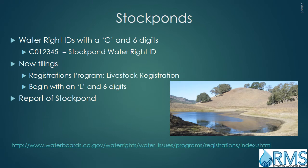Stock Pond registrants can be identified by a Water Right ID that begins with a C followed by six digits. Federal Stock Ponds begin with an F and end with a C. Stock Pond Water Rights are agreements with the Water Board that include provisions such as when and how much water may be diverted, what the water may be used for, and where the water may be used. Stock Pond certificates have been phased out; new Stock Pond users should apply for a livestock registration through the Registrations program. Stock Pond holders file a Report of Stock Pond to record their annual water diversion.